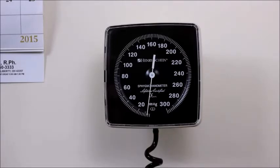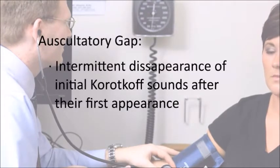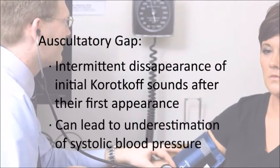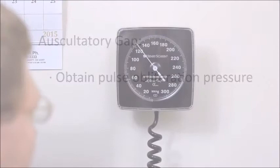An auscultatory gap is defined as the intermittent disappearance of the initial Korotkoff sounds after their first appearance. This phenomenon can lead to underestimation of systolic blood pressure. Obtaining the pulse obliteration pressure can be helpful in avoiding incorrect measurement.